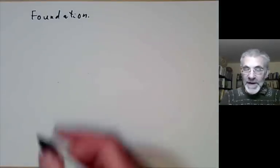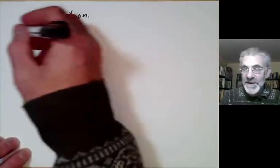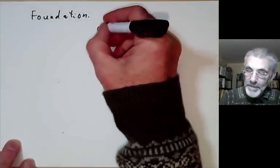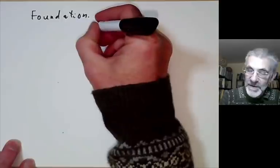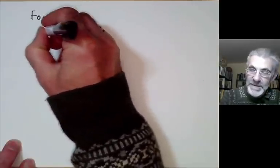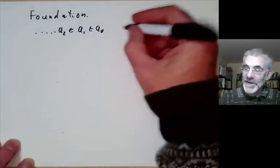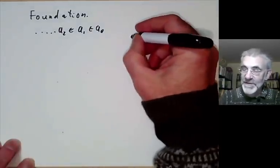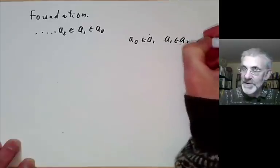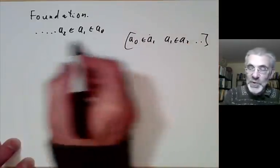The axiom of foundation says that you can't have an infinite series of sets each of which is contained in the next one. You can of course have an infinite series going a0 ∈ a1, a1 ∈ a2 and so on — that's perfectly okay. Foundation just rules out an infinite descending chain.